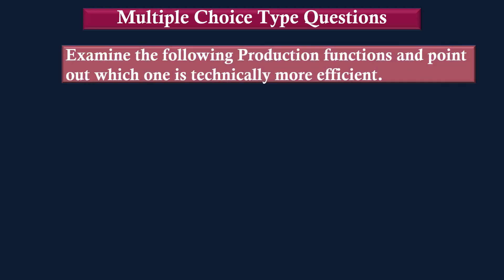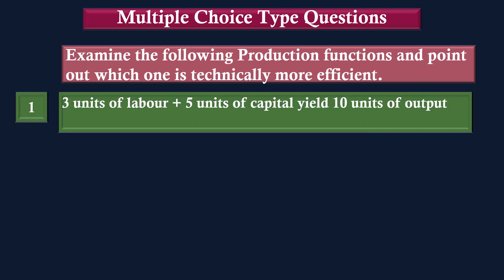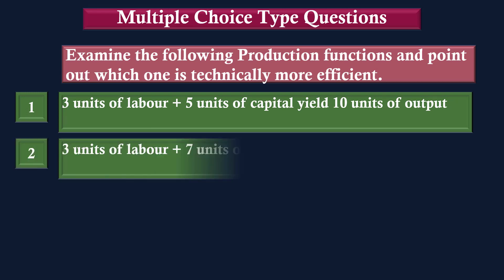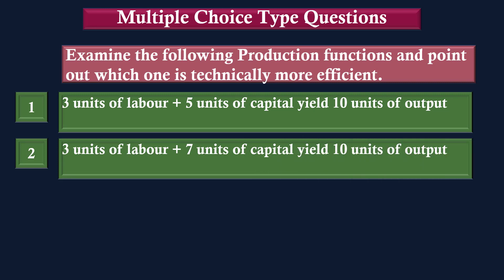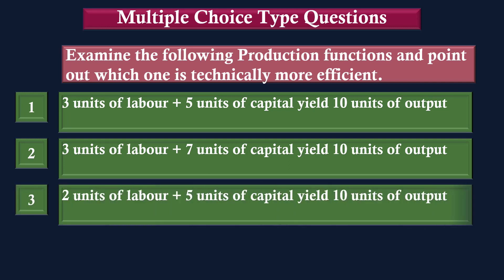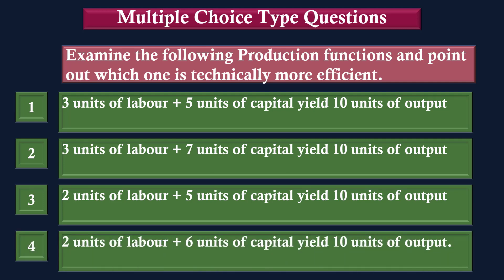Examine the following production functions and point out which one is technically more efficient. 1. Three units of labour plus five units of capital yield ten units of output. 2. Three units of labour plus seven units of capital yield ten units of output. 3. Two units of labour plus five units of capital yield ten units of output. 4. Two units of labour plus six units of capital yield ten units of output. The correct answer is 3.